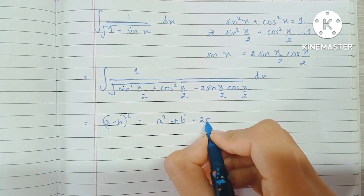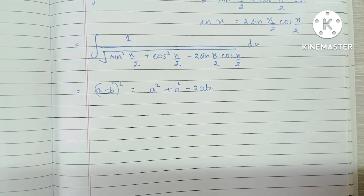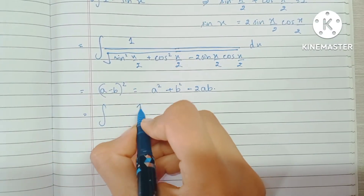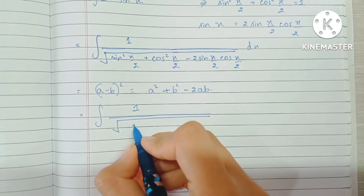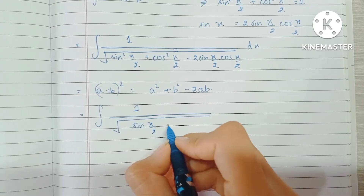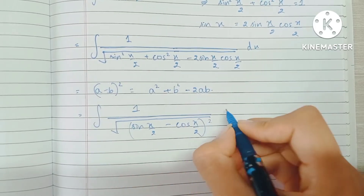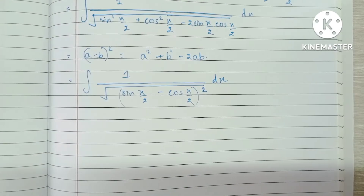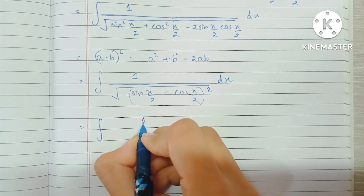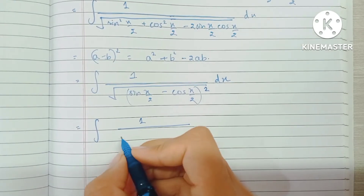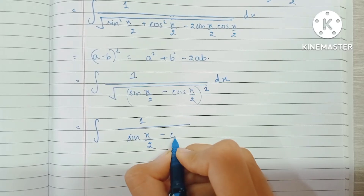So we substitute sine(x/2) minus cos(x/2) in the denominator as the whole square of (sine(x/2) minus cos(x/2)). Now we have a whole square under a square root, so the denominator simplifies to sine(x/2) minus cos(x/2).